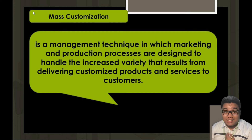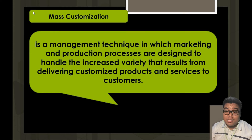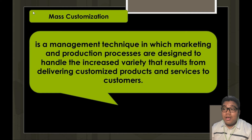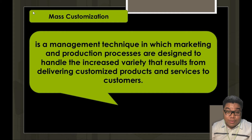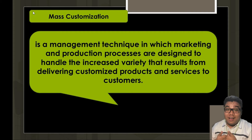An example of mass customization is row houses. Real estate companies offer row houses — pre-designed houses for sale in subdivisions — while also allowing certain modifications to be incorporated into the design of the house they are selling. That is mass customization because it has a baseline design with some modifications available.